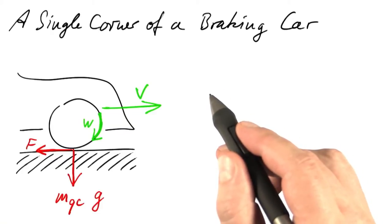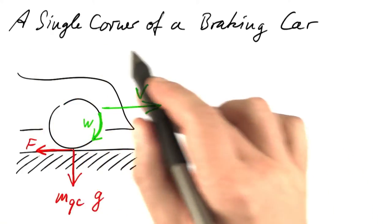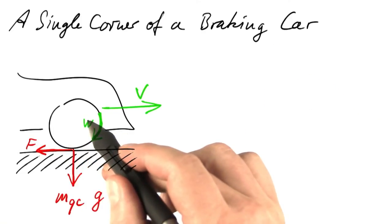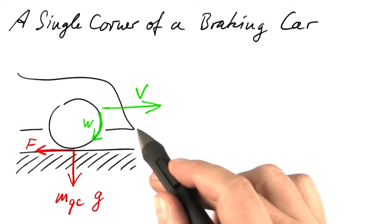Now we are in a position to write down differential equations. We look at a single corner of that braking car, just a single wheel, not all four wheels, and just a quarter of the mass of that car.